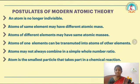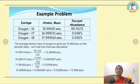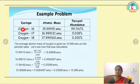Next, we are going to revise how to find the average atomic mass. We usually find average atomic mass for elements that occur as isotopes naturally. For example, oxygen occurs in three isotopes: oxygen-16, oxygen-17, and oxygen-18. We need two things to find the average atomic mass: the atomic mass of the isotopes, and the percentage abundance.